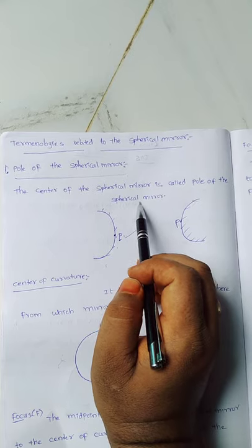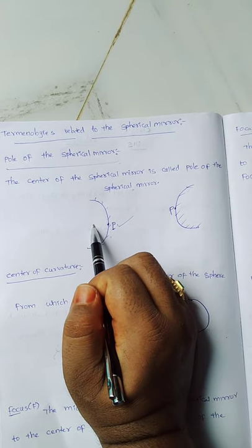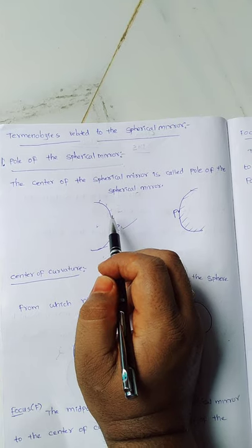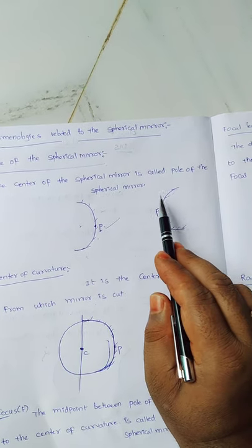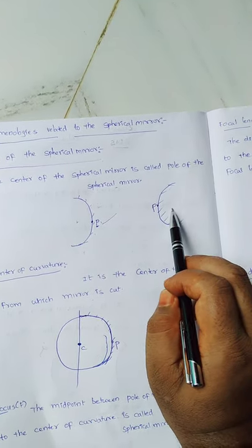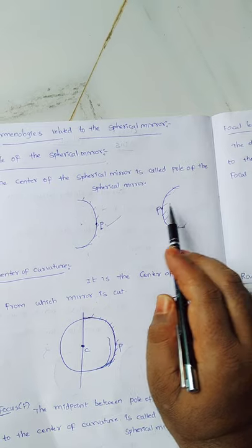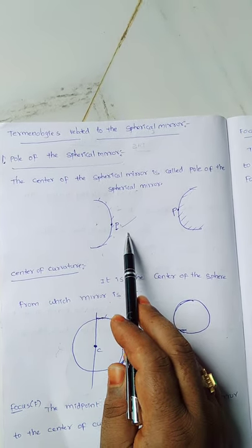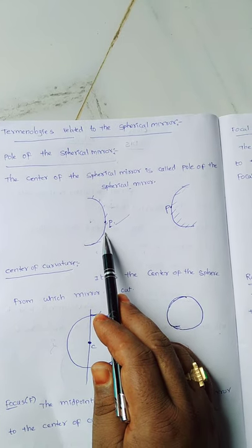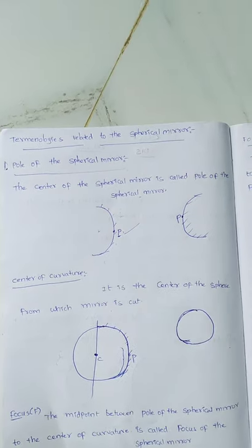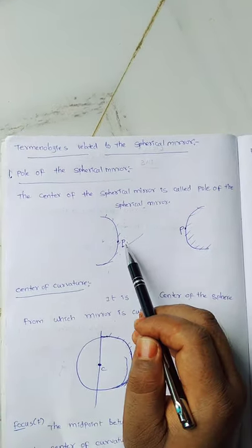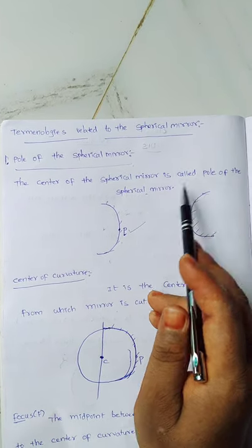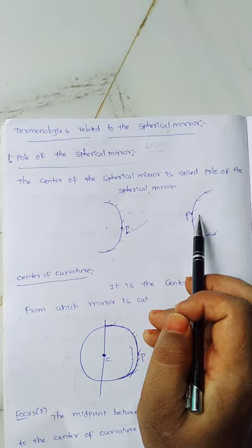The pole of the spherical mirror is nothing but the center of the spherical mirror. For concave mirror, the inside surface is the reflecting surface and the outside surface is silver-coated. For convex mirror, the outside surface is the reflecting surface and the inside surface is silver-coated. All terminologies are the same for both concave and convex mirrors. The center of the spherical mirror is called the pole of the spherical mirror.